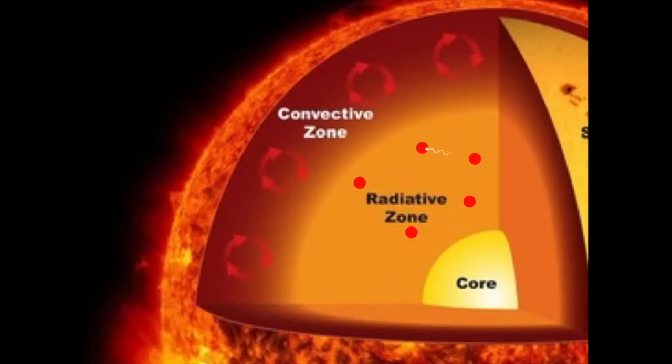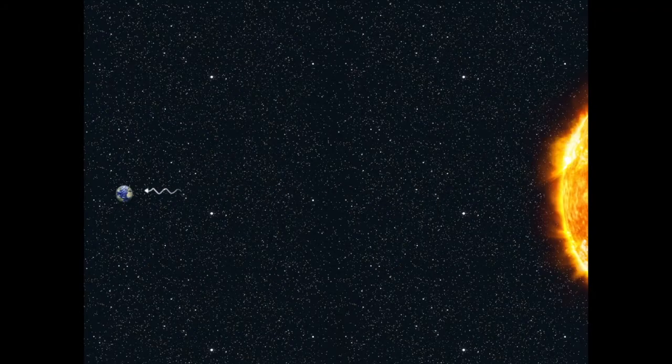The light beam must pass the radiation zone and the convection zone before finally exiting the sun, reaching Earth 8 minutes later.